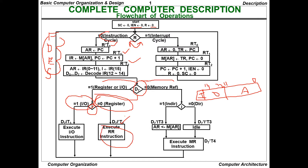At T3, register reference instructions execute, and I/O instructions execute on their respective paths. Coming to the interrupt cycle when R=1: at R-T0, PC is saved to TR and the address register is set to 0. At R-T1, PC is set to 0 and TR receives the contents of M[AR] — the temporary register gets the memory location of the address register.